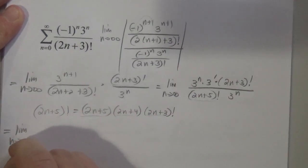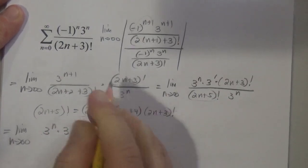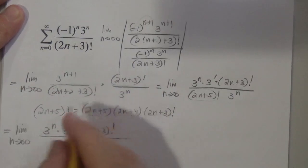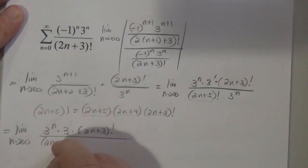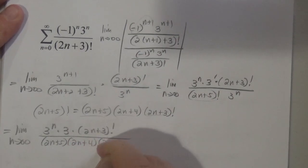So I get the limit as n goes to infinity of 3 to the n times 3 times (2n + 3) factorial. Here's part of my denominator: (2n + 5)(2n + 4)(2n + 3) factorial times 3 to the n.